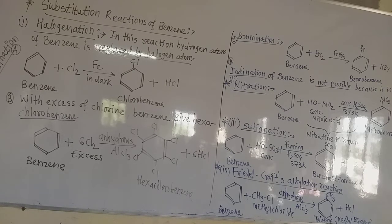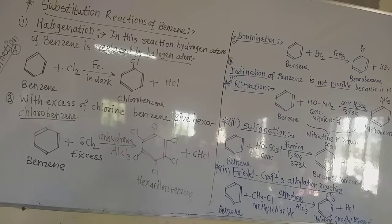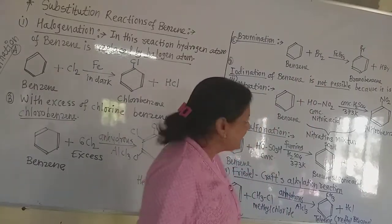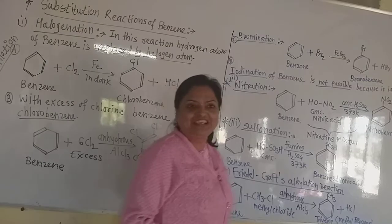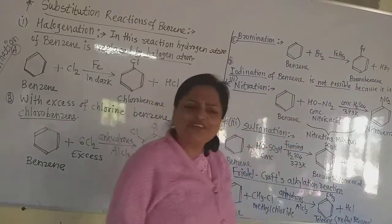Now come to the next reaction, that is bromination. In bromination, bromine reacts similarly to chlorine. The catalyst required here is ferric tribromide, FeBr3. One of the hydrogen atoms of benzene is replaced by one bromine atom, and there is formation of bromobenzene. Just as it is called chlorobenzene in chlorination, here it is called bromobenzene. The replaced hydrogen and remaining bromine atom form HBr as byproduct.